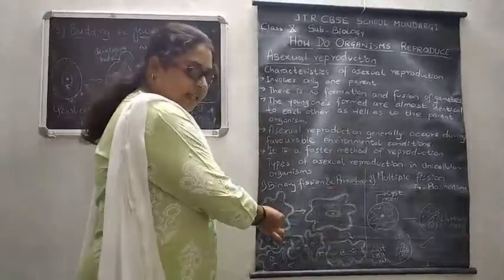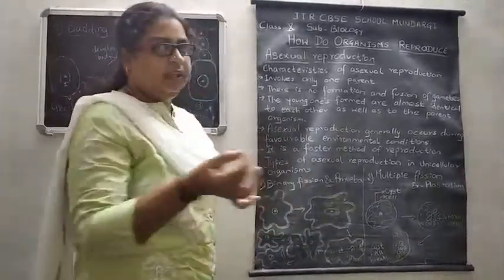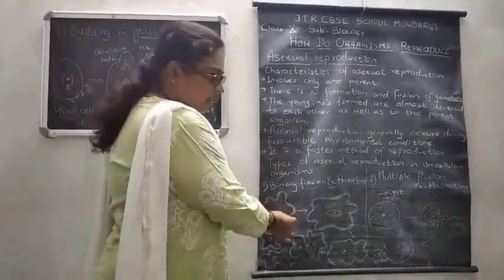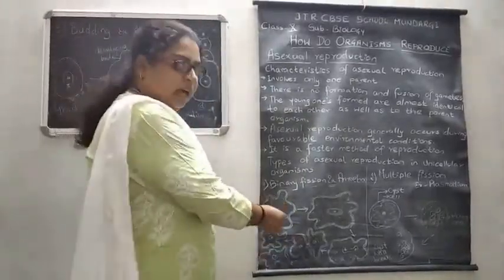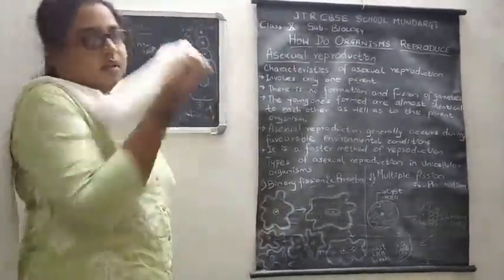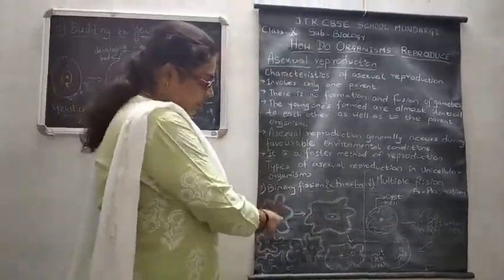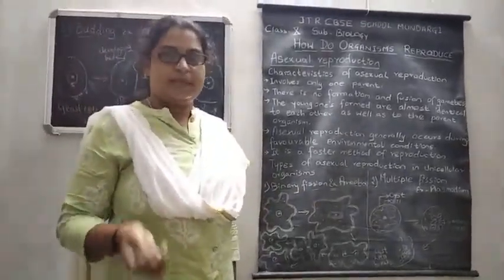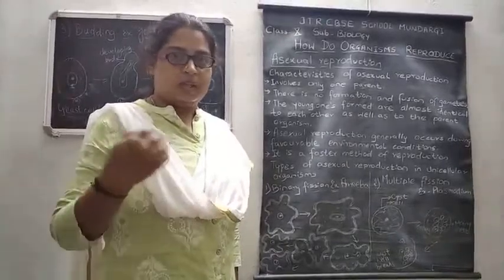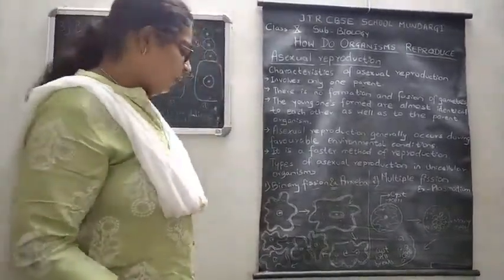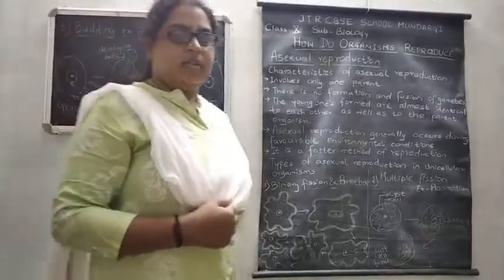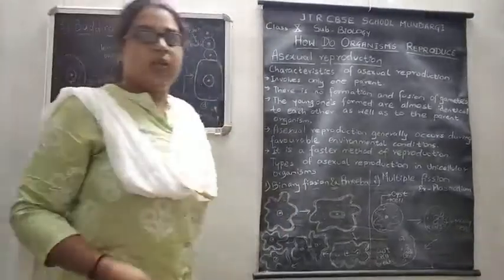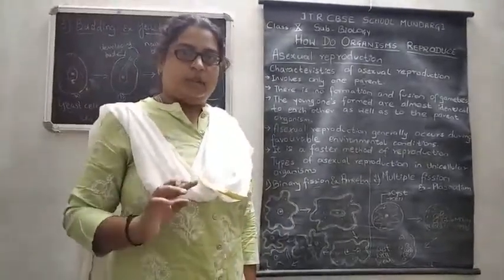In amoeba, in binary fission, first the nucleus of the cell divides. After that, the jelly-like substance inside the amoeba — called cytoplasm — also divides. So in this asexual method of reproduction, both division of the nucleus and division of the cytoplasm take place. Division of the nucleus is called karyokinesis.